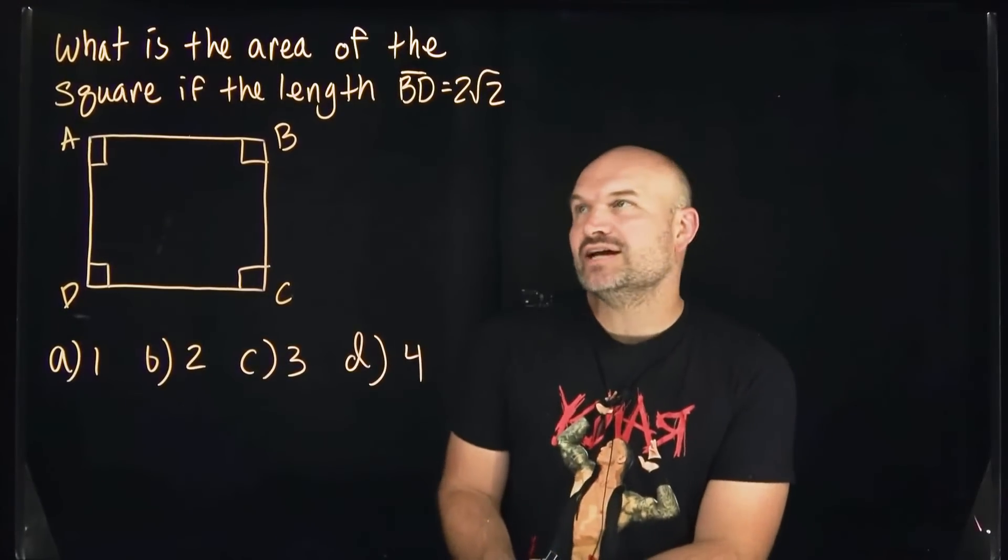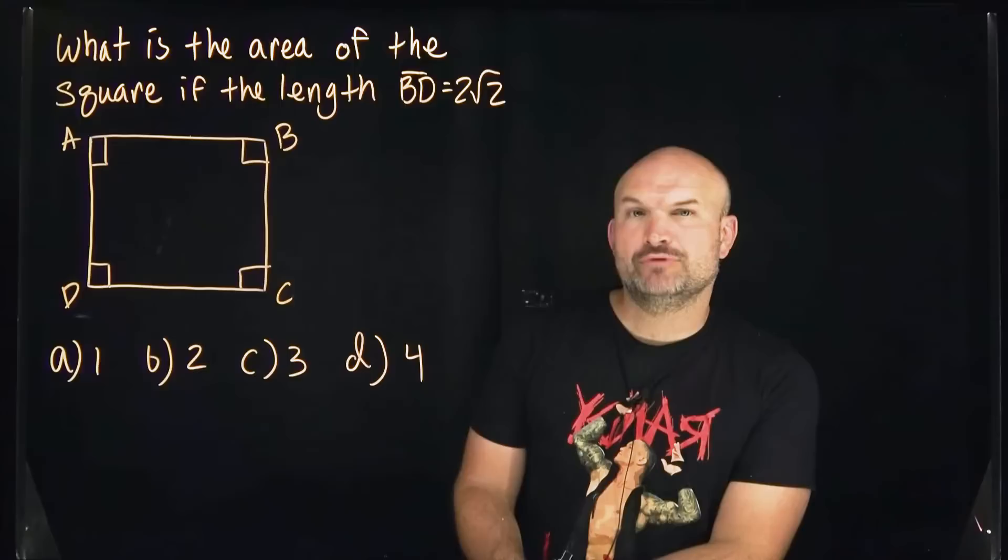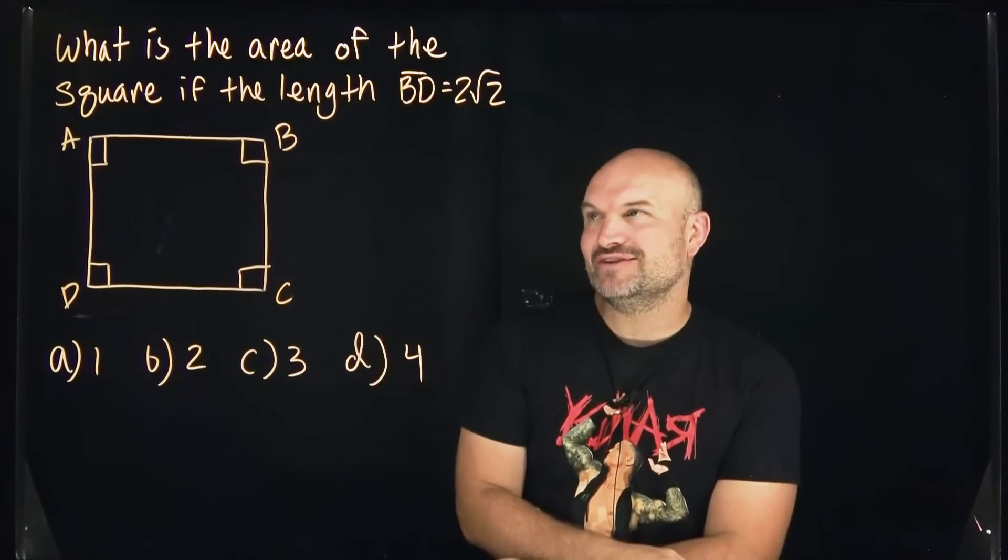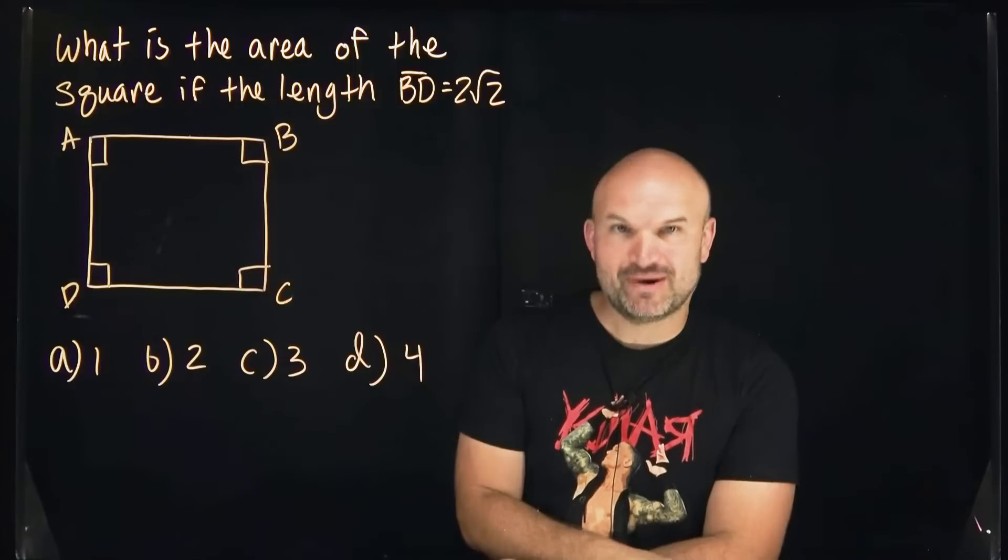So in this problem, we need to be able to find the area of the square, and we have one length. The problem is the length is going to be a diagonal. So how are we going to find the area of the square?